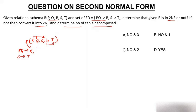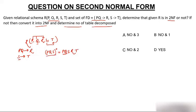Determine all those attributes which do not have any arrow pointing towards them. P is not having any arrow, Q is not having any arrow, R is having an arrow, T is having an arrow, S is also not having an arrow. So P, Q and S are attributes which do not have any arrow pointing towards them. The candidate key will definitely contain these attributes. Finding the closure of PQS: start with PQS, use PQ→R to add R, use S→T to add T. The closure of PQS determines all attributes, so 100% the candidate key is PQS.